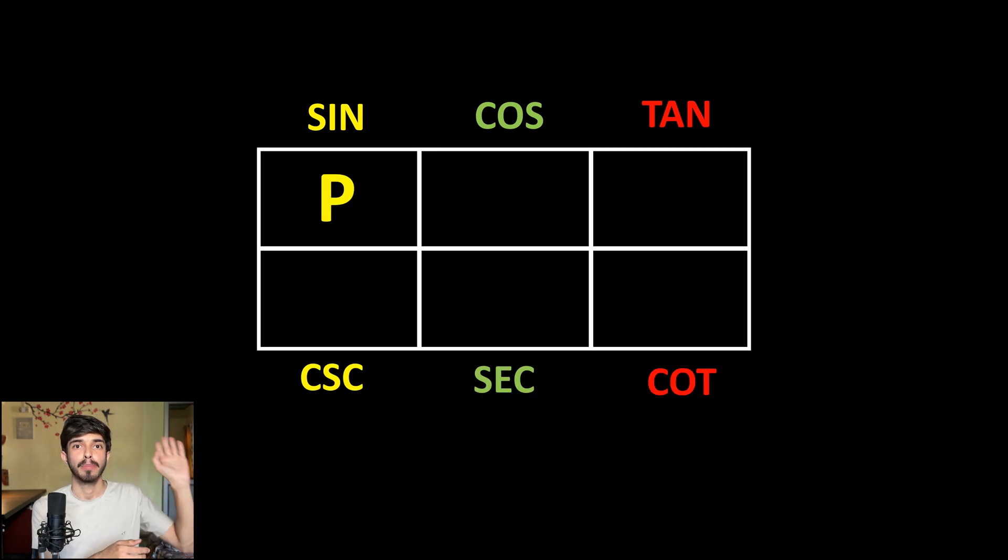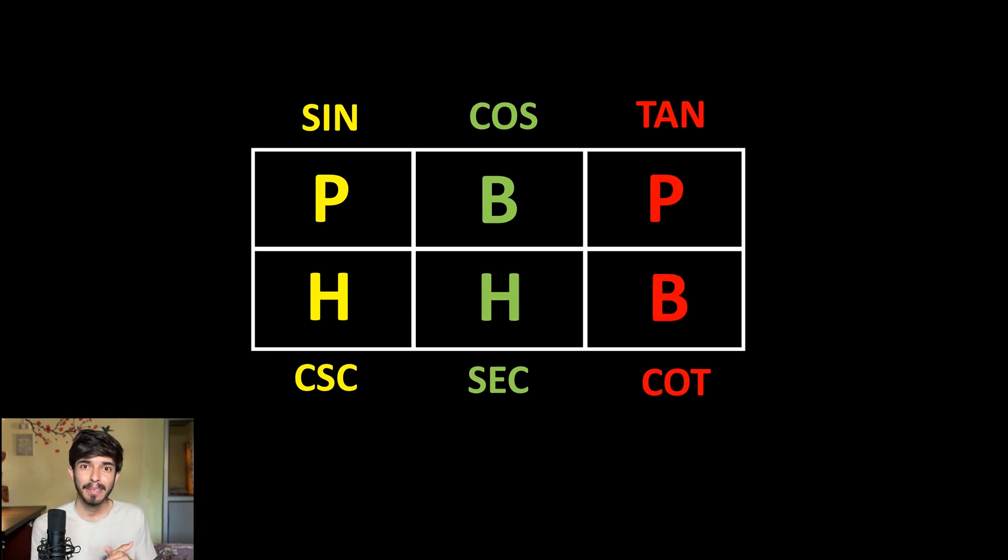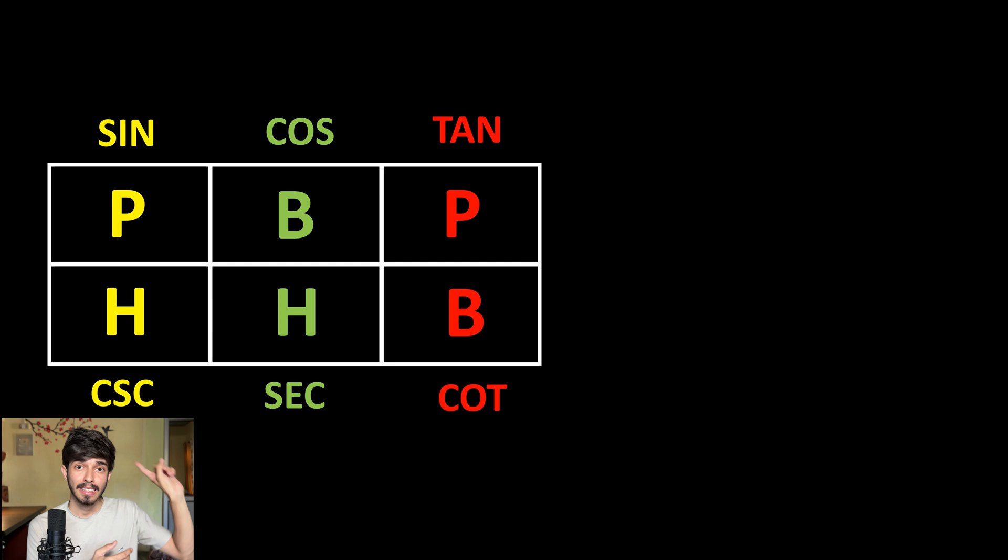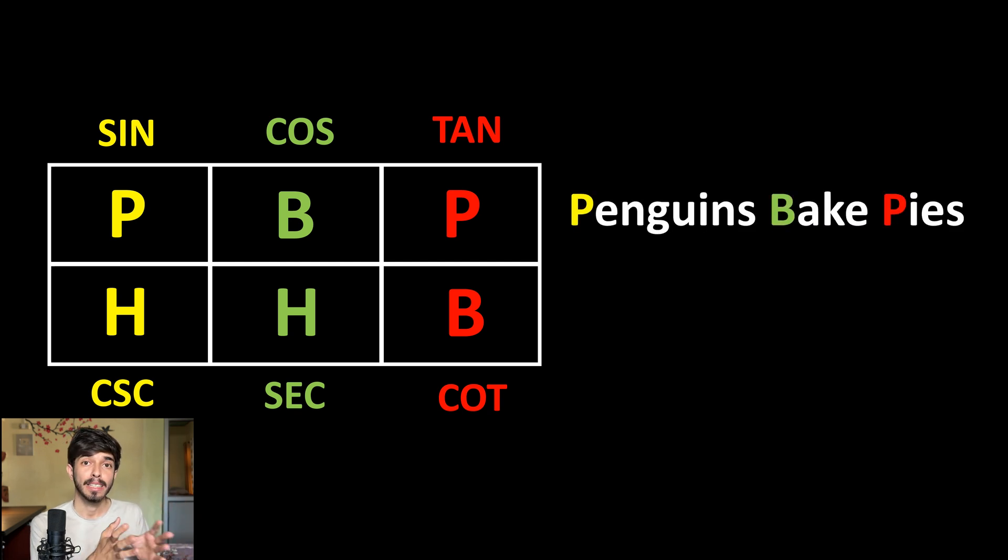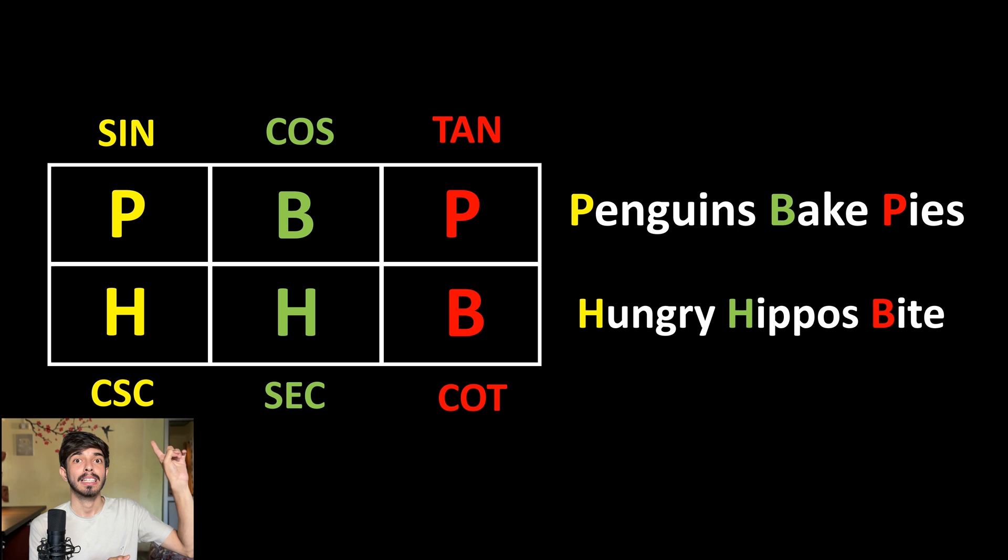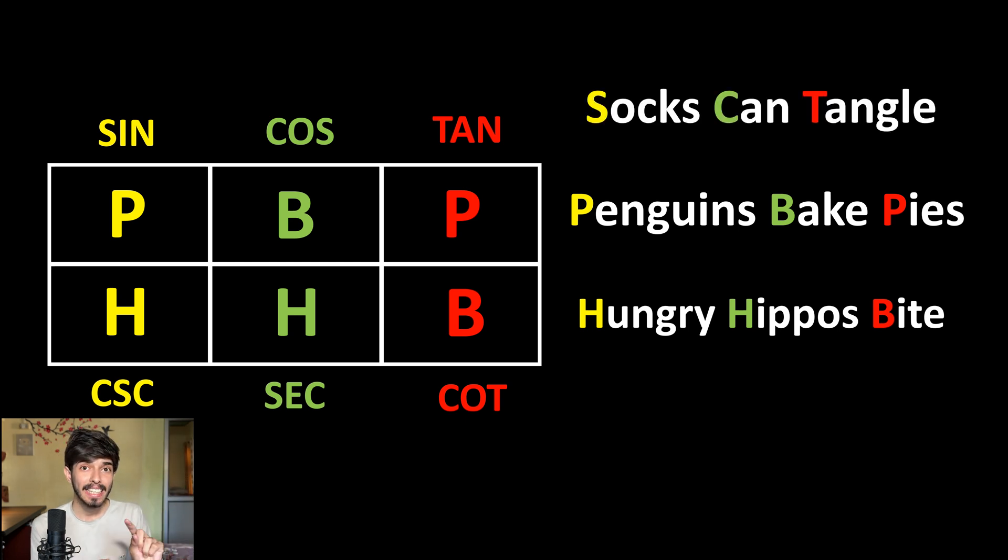An easy way to remember all this is like this. You can make this small table on paper really quickly. Sin, cos, tan, cosecant, secant, cot. Then perpendicular base, perpendicular, hypotenuse, hypotenuse base. Now to make this table, here is a cool mnemonic for you. To remember this inner thing, you can say penguins bake pies, hungry hippos bite. To remember this above one, you can say socks can tangle cute small cats. Sin, cos, tan, cosecant, secant, cot. It's very easy. Once you repeat it 4 to 5 times, you will remember it very easily.